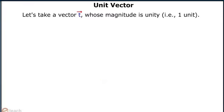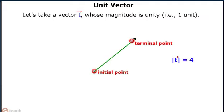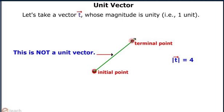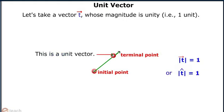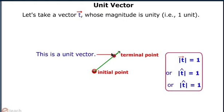Let us take a vector T with magnitude mod of T equals to 4. This is not a unit vector. Let us reduce its magnitude by 1 unit — to 3, to 2, and now mod of T equals to 1. When the magnitude of a vector is equal to unity, the vector is called a unit vector.